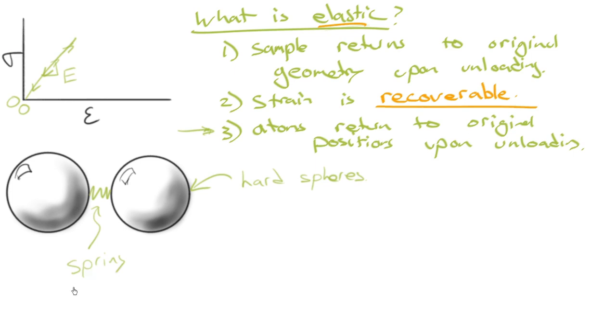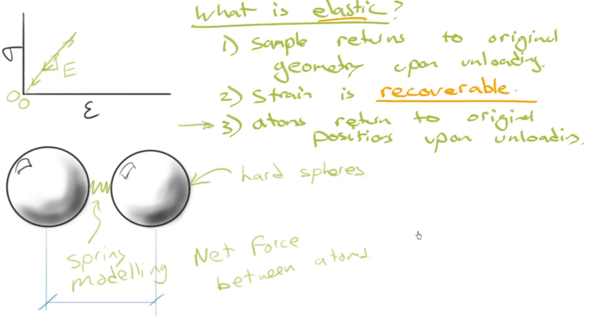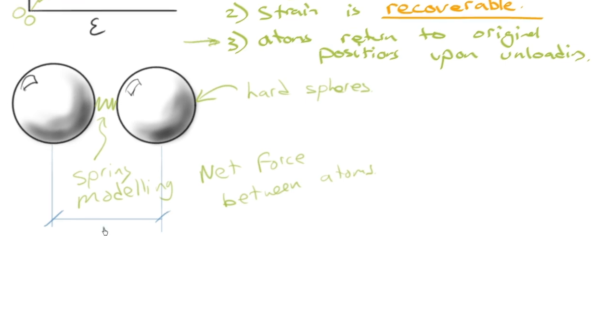And what the spring is doing is it's modeling whatever the net force is between atoms. The last thing I'm going to do with this little sketch is I'm going to actually dimension here the space between the atoms. And that is going to be called, for historical reasons, R. Okay? That is the interatomic spacing.